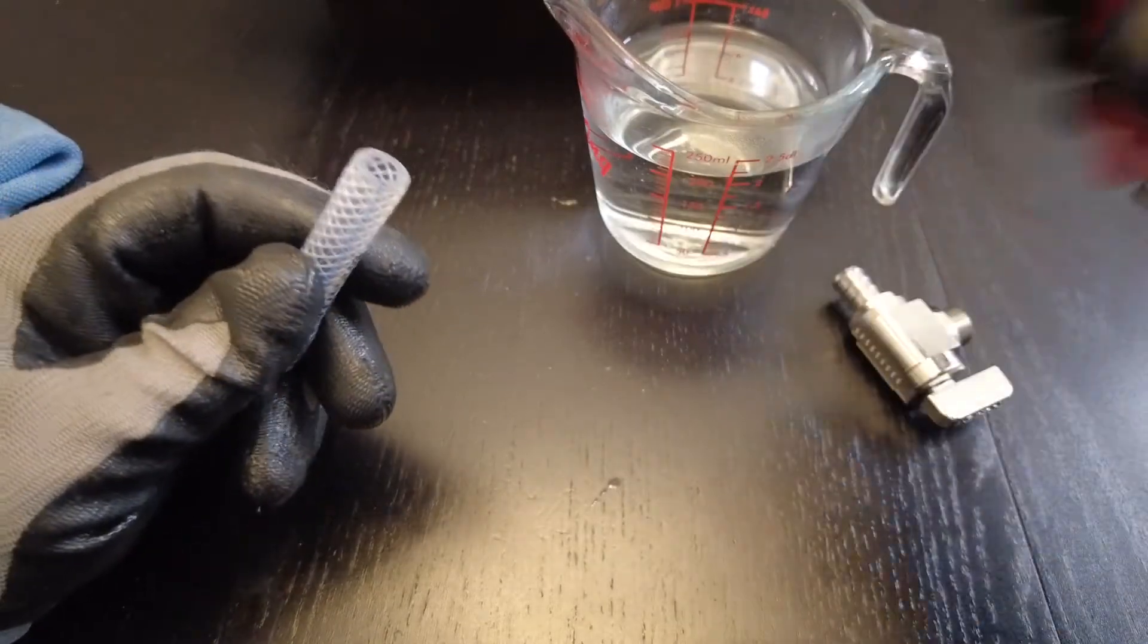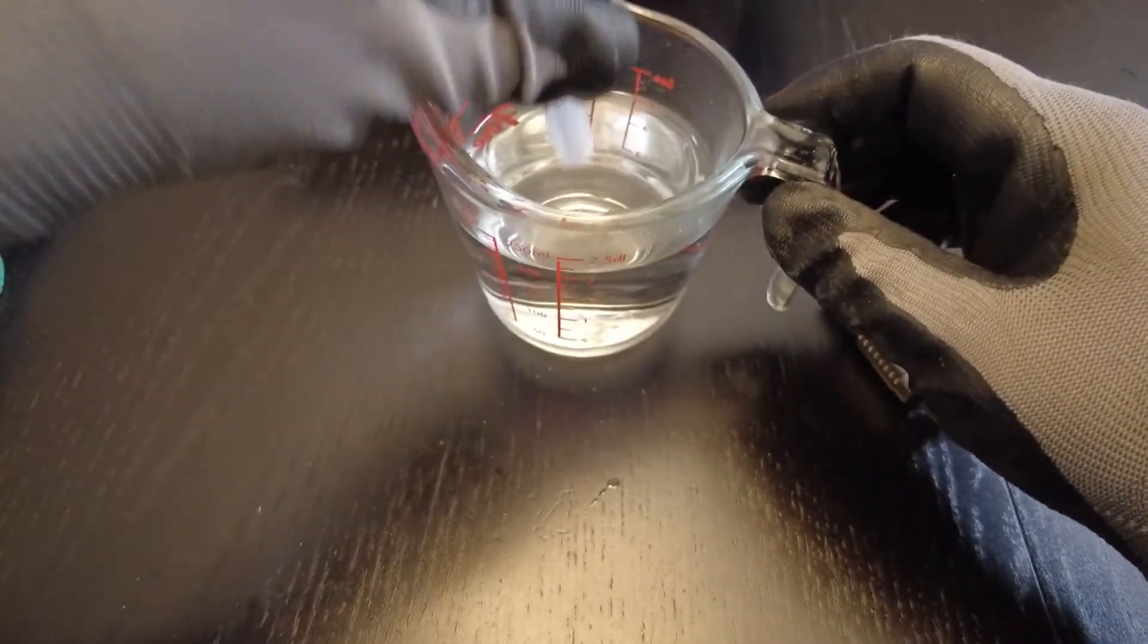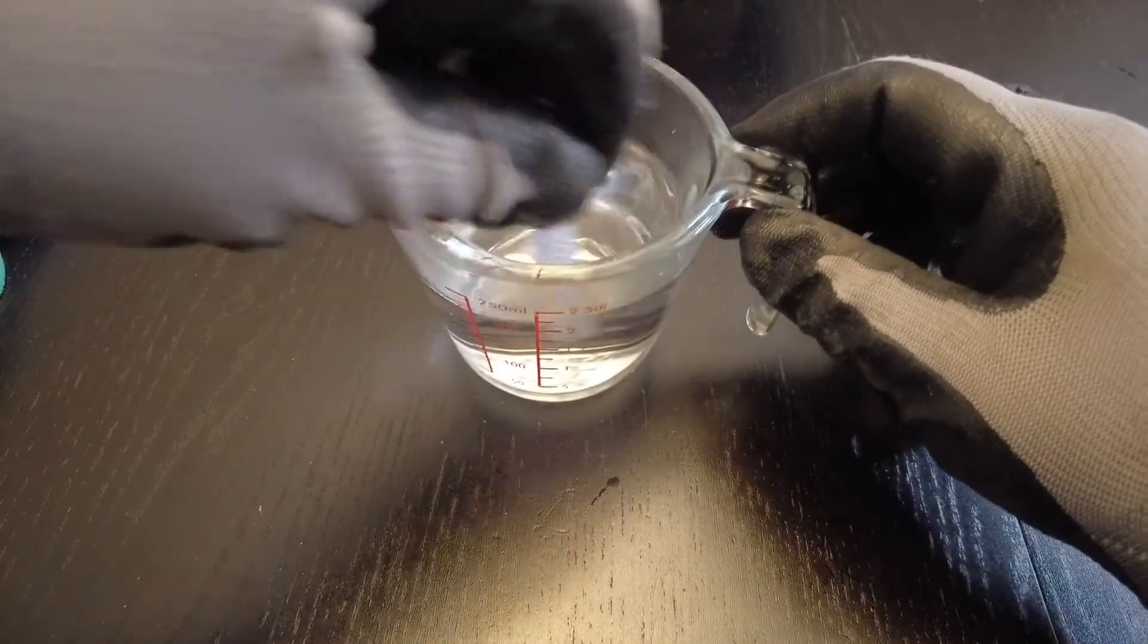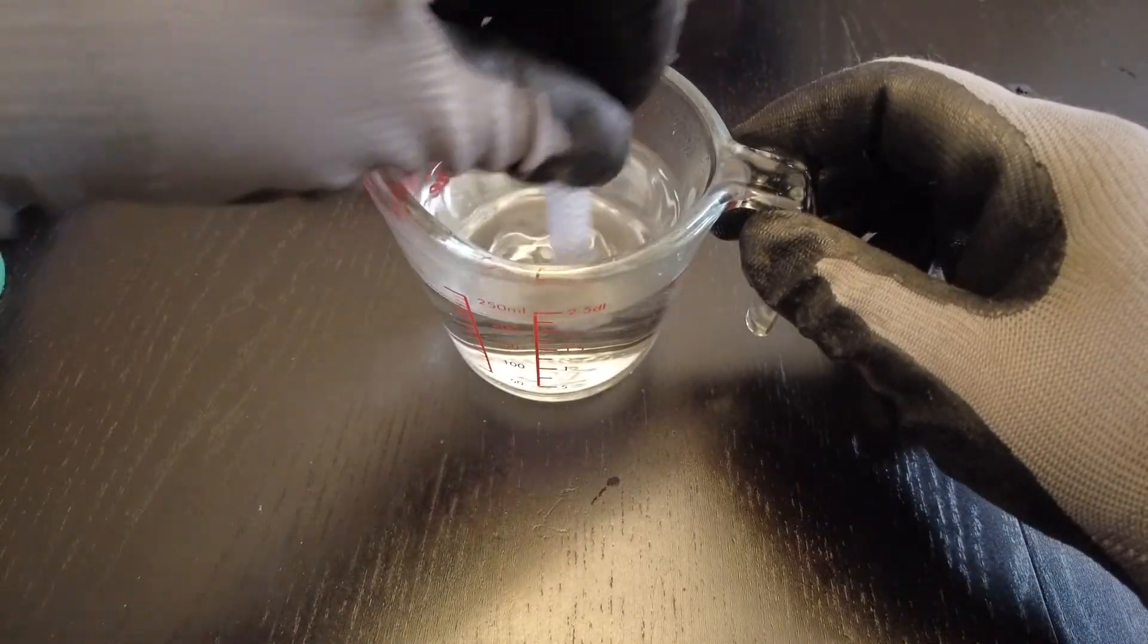So microwave some hot water to the boiling point then dip the vinyl tubing into the hot water for a few seconds so that the material becomes more flexible.